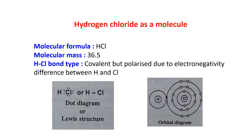The formula of hydrogen chloride is HCl. Its molecular mass is 36.5. In hydrogen chloride, a covalent bond is present, but this is a polarized one due to the electronegativity difference between hydrogen and chlorine. This is the electron dot structure of HCl, and this is the orbital diagram showing the covalent bonding present in HCl.